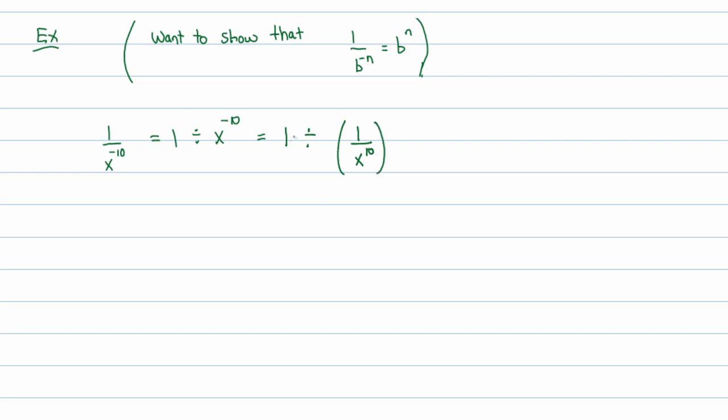So I have 1 divided by 1 over x to the 10th. Well, I can change that division into a multiplication if I flip the back fraction. That would be x to the 10th. Oh wait a second. So 1 over x to the negative 10th is equal to, through a chain of equalities, x to the positive 10th. And that is the justification as to why this theorem is true.